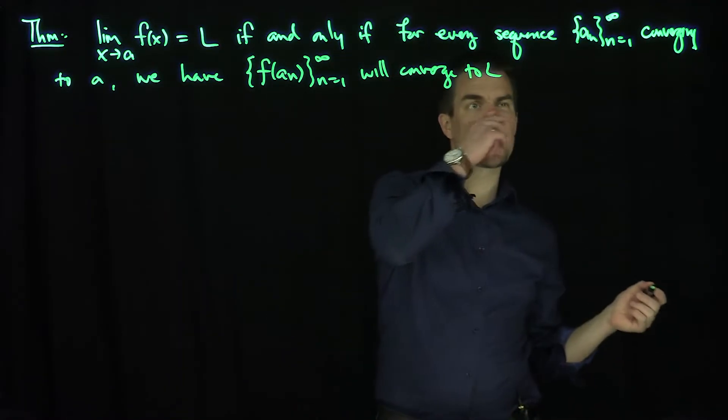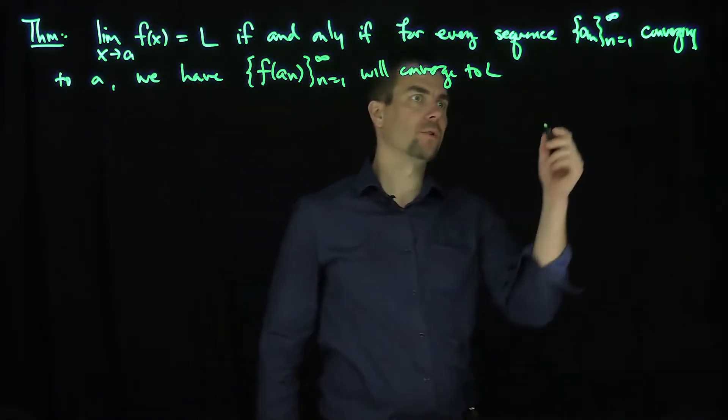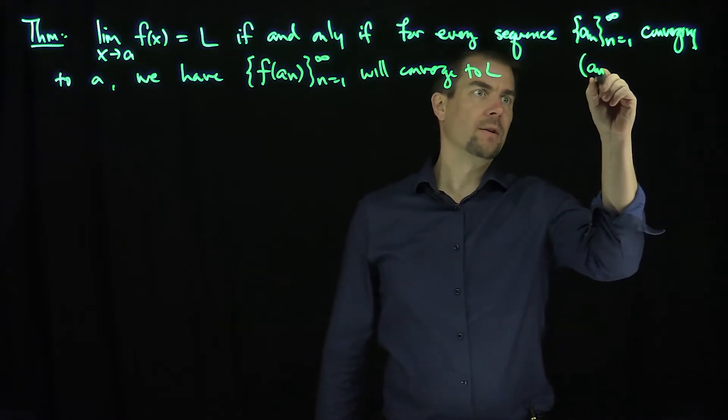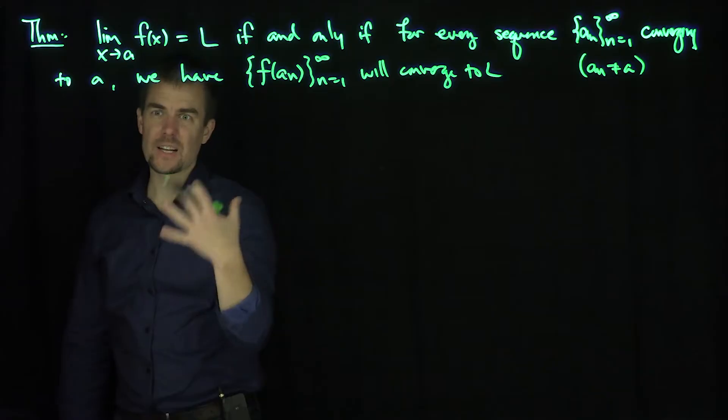And we should specify that these aₙs cannot necessarily be equal to a themselves, because a does not necessarily have to be in the domain of the function f. So we should specify here that aₙ should not be equal to a, because we need to be consistent with our idea of a limit point.